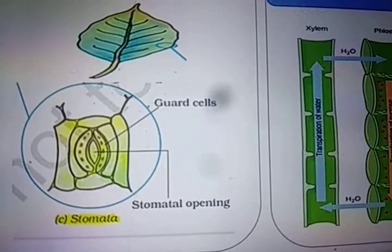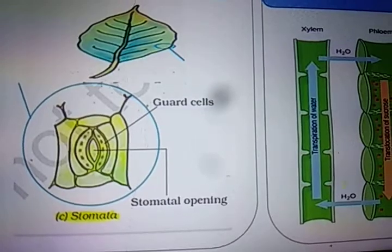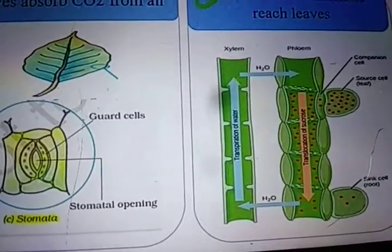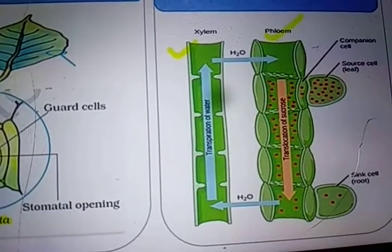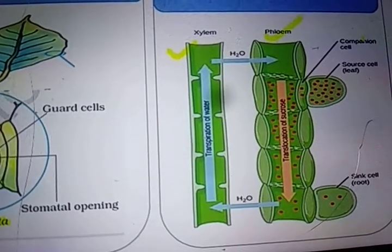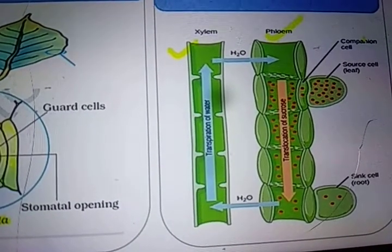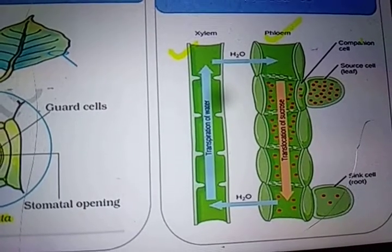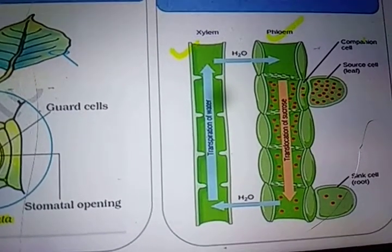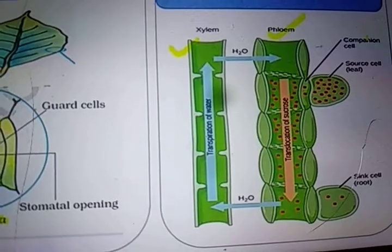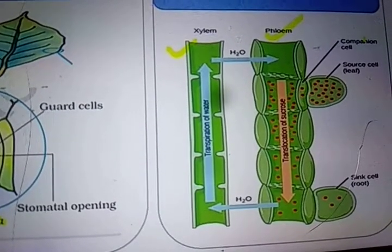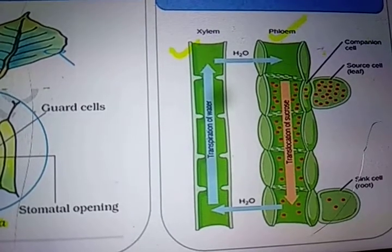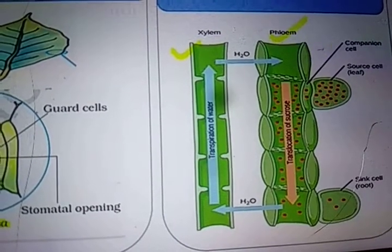Now we will understand how water and minerals reach the leaves. Water and minerals reach leaves through pipe-like structures known as xylem and phloem, which are present in the roots, stem, branches and leaves of a plant. Through these structures, water and minerals are transported from the roots to the leaves of the plant.